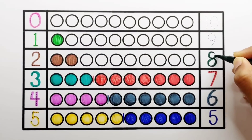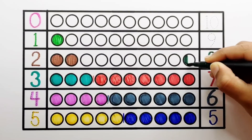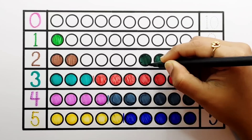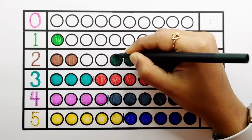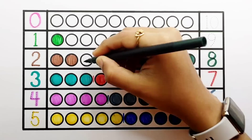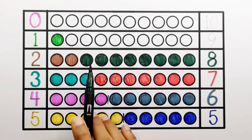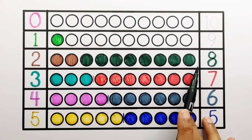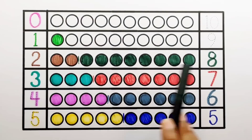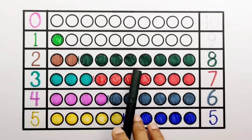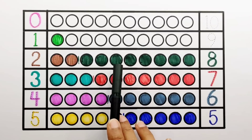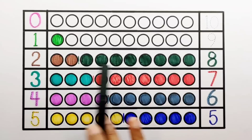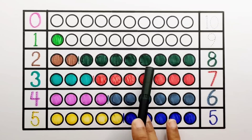Number 8. 1, 2, 3, 4, 5, 6, 7, 8 — 8 balls. 2 plus 8 makes 10. 1, 2, 3, 4, 5, 6, 7, 8, 9, 10. 2 plus 8 equals 10.